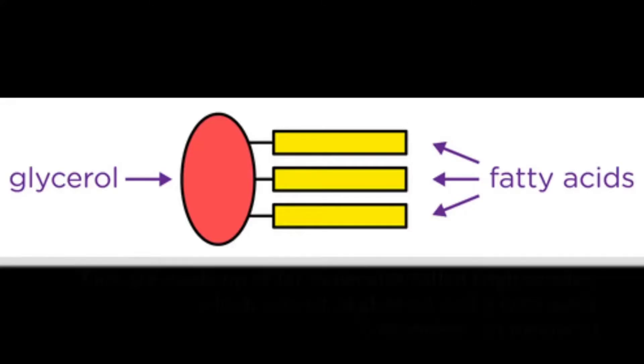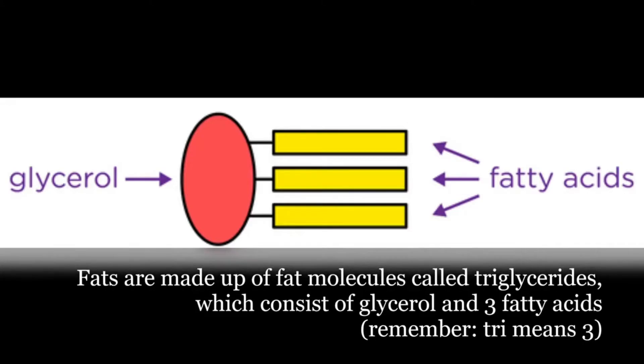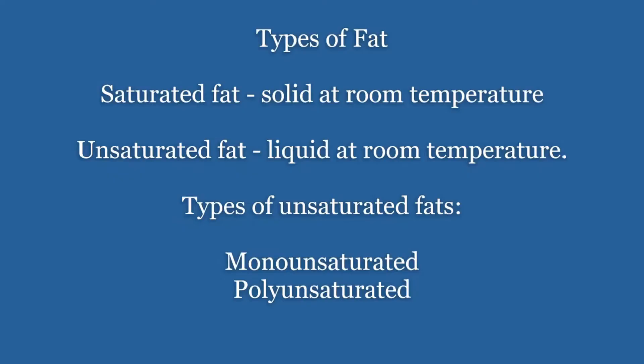Fats are made up of fat molecules called triglycerides. They consist of glycerol and three fatty acids. Saturated fats tend to be solid at room temperature, such as butter, and unsaturated fats tend to be liquid at room temperature, such as olive oil. Types of unsaturated fats include monounsaturated and polyunsaturated.